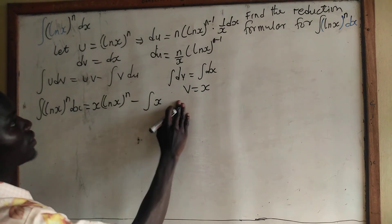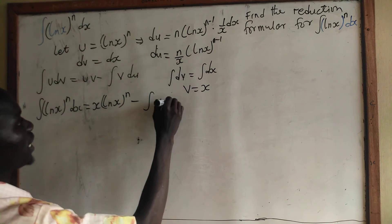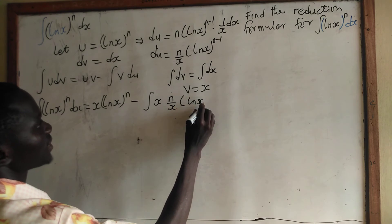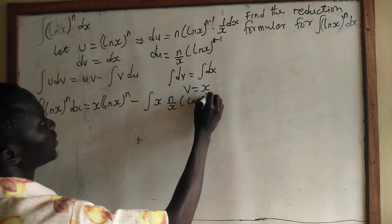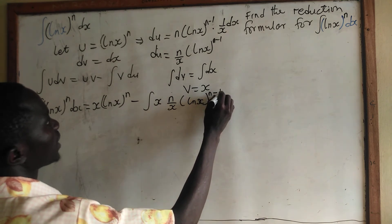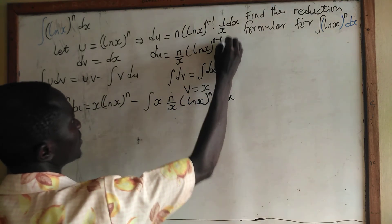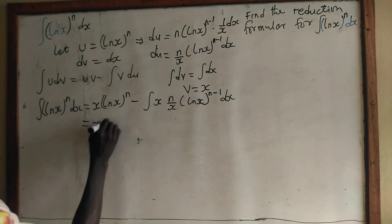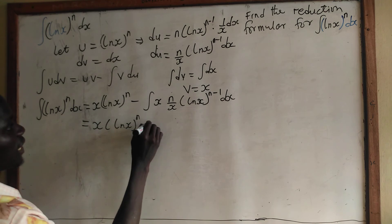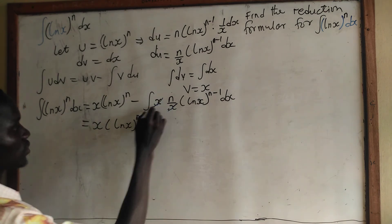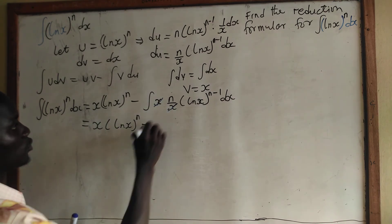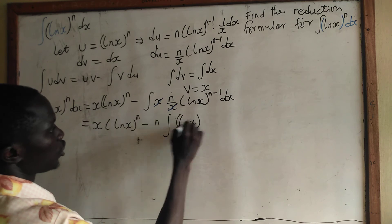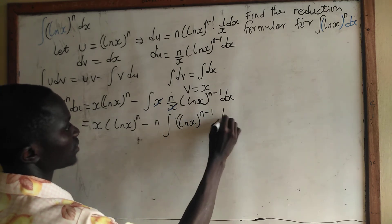So applying integration by parts, this will be equal to x times (ln x) to the power n, minus the integral of v du. The x in v and the x in the denominator of du will cancel, so we get n as a constant outside the integral of (ln x) to the power n minus 1 dx.